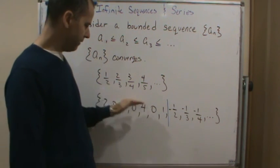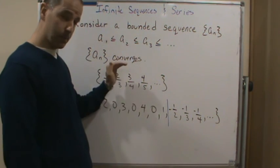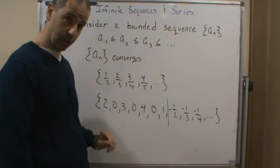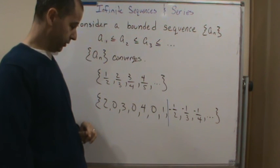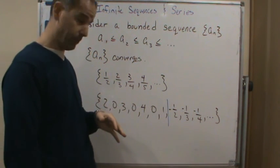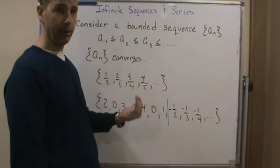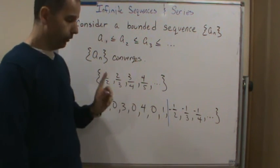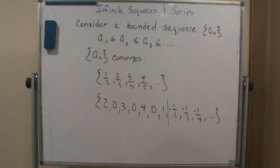But in both cases, since it's either increasing or eventually increasing, the fact that it's bounded from above in this case and this case leads us to the conclusion based on the theorem that these converge. Now, the same thing applies to decreasing functions or eventually decreasing functions and being bounded from below. So that's going to bring us to our next definition.